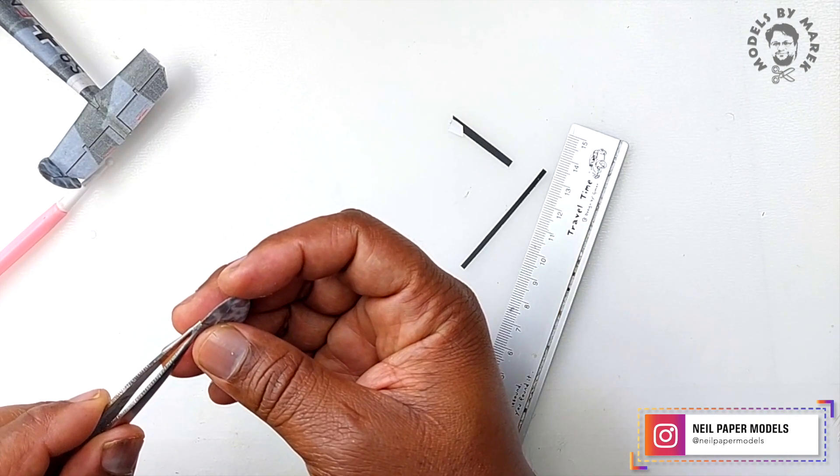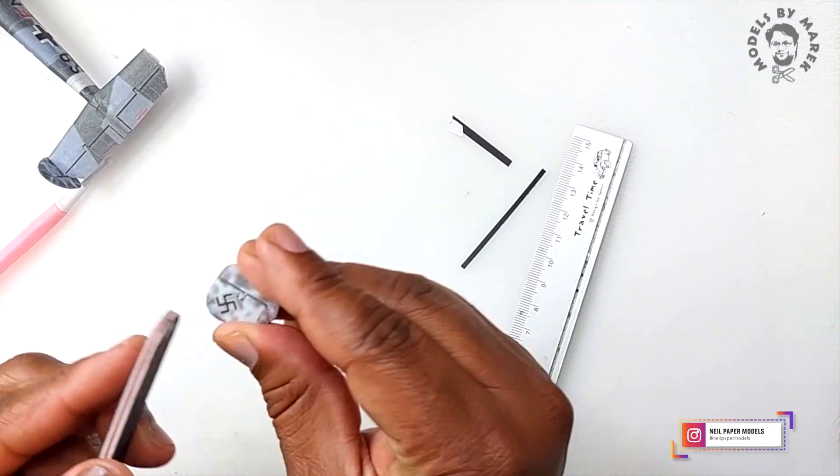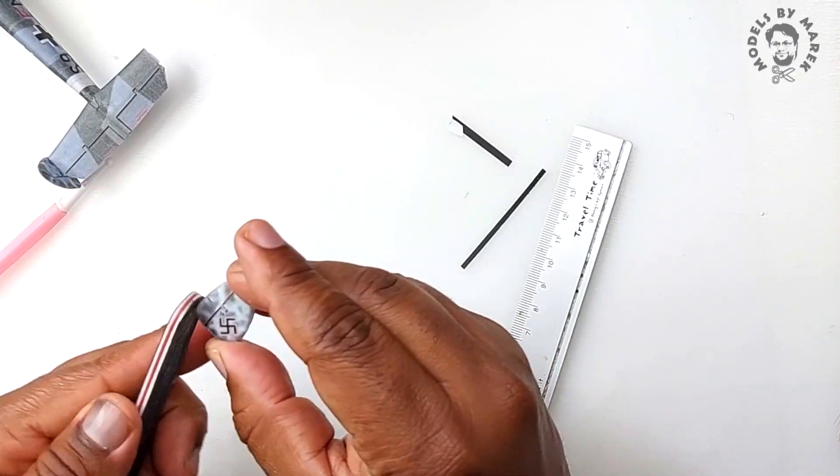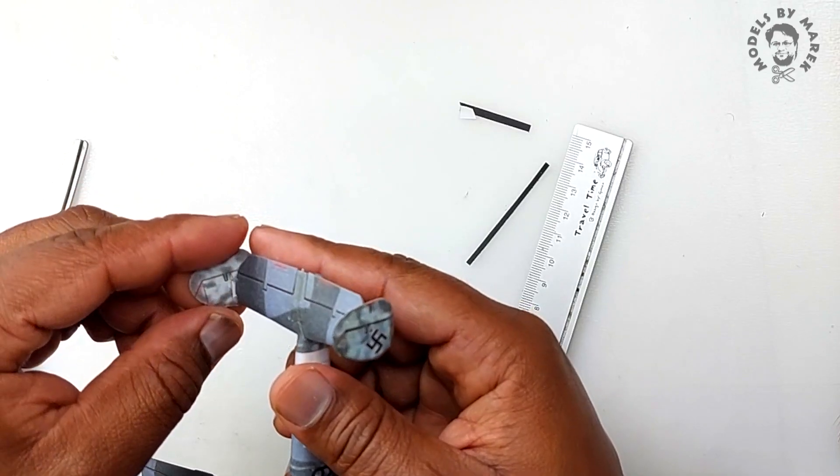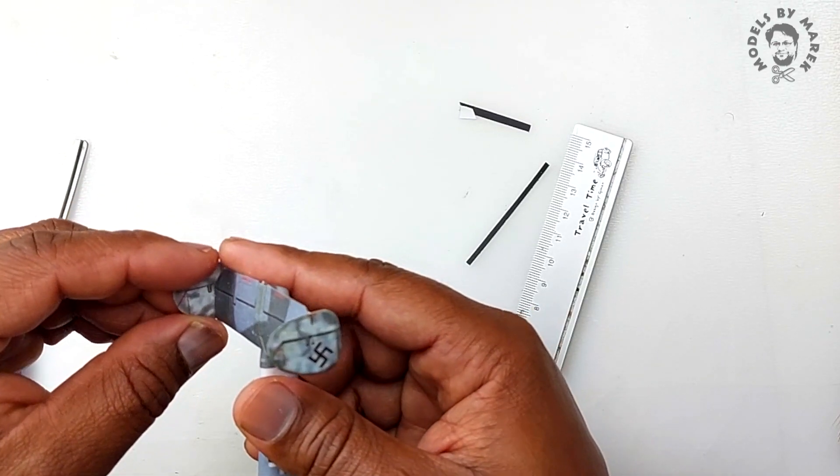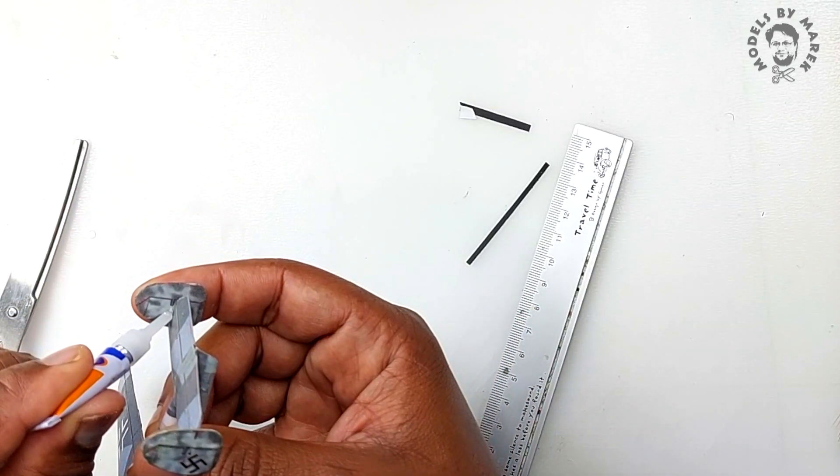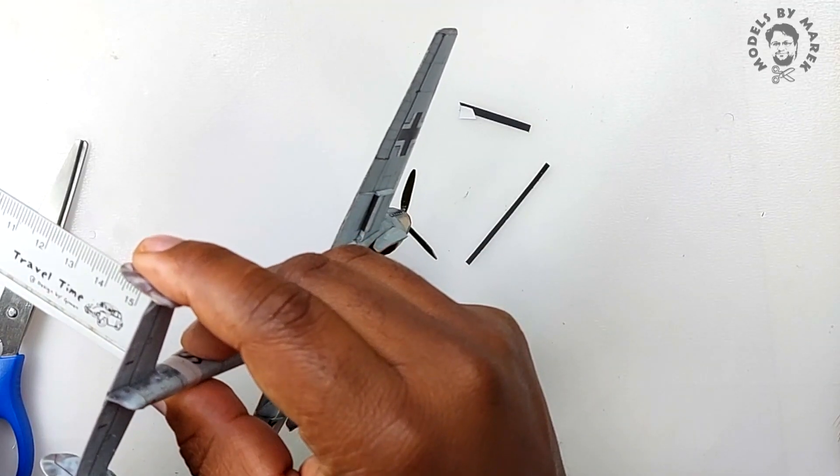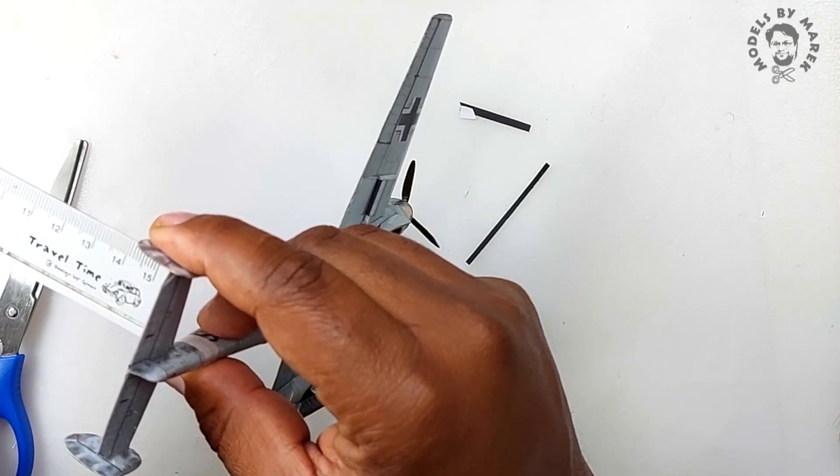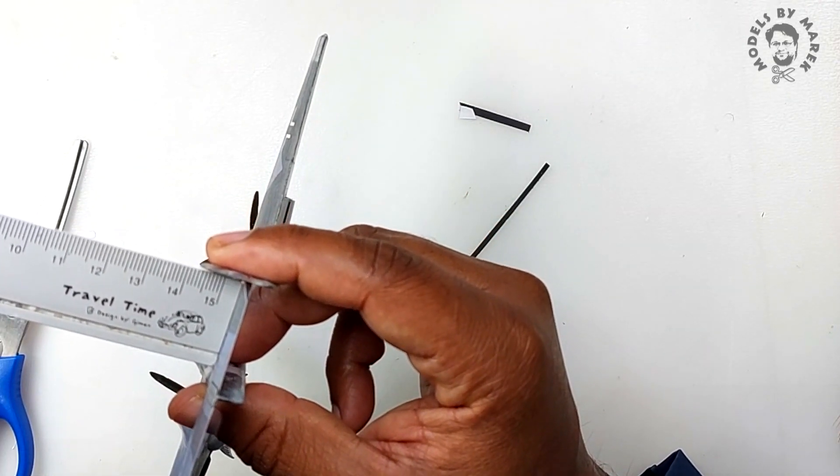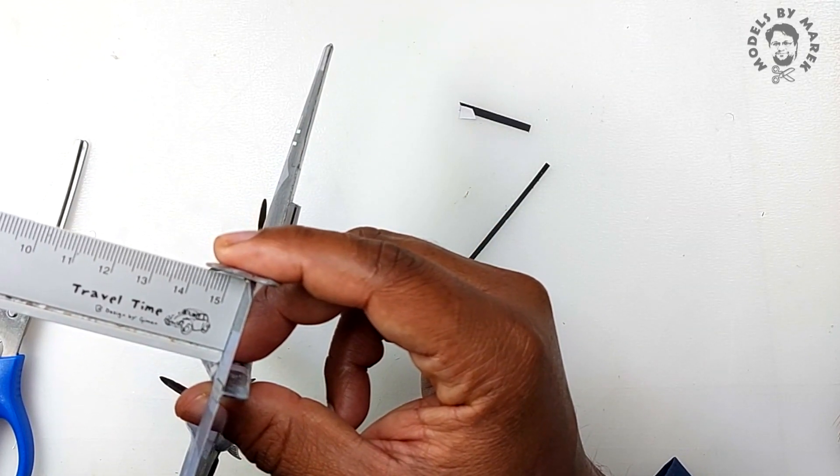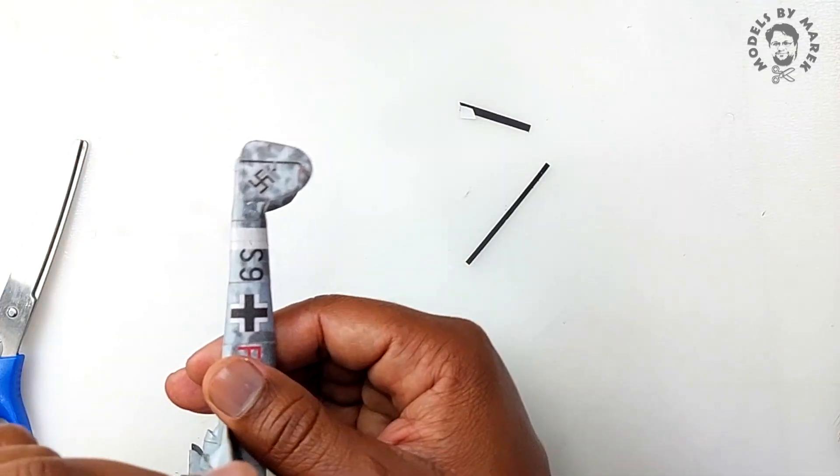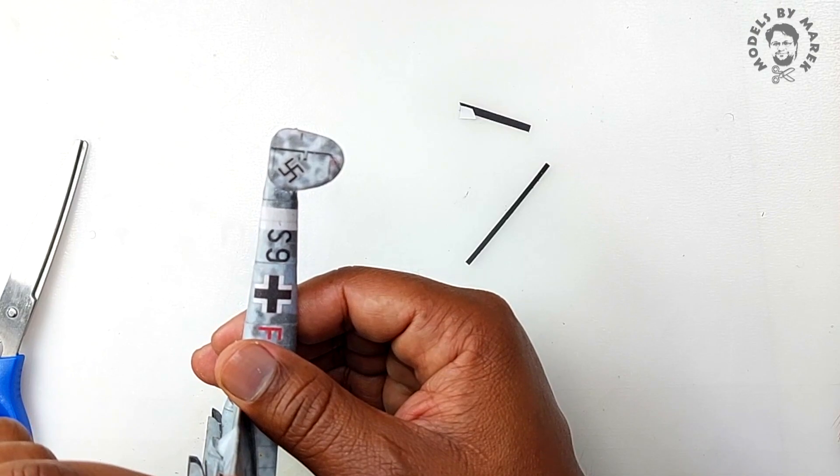So now once joined, what we do is lightly sand the edges and then we can repaint again. But in doing so, it will be perfect. And then we tack in place. Lovely. And now to ensure a right angle, we use our ruler. Wonderful. This is how we do it. And there you have it.